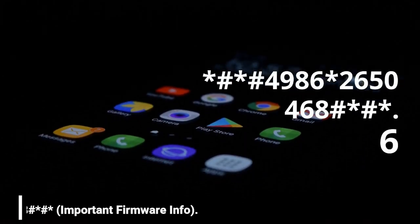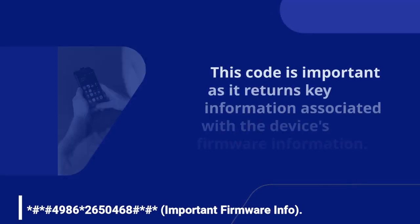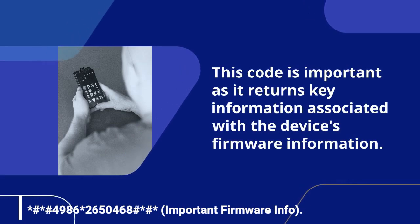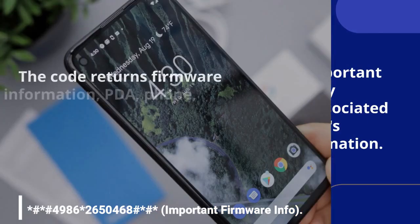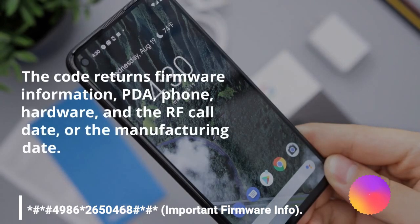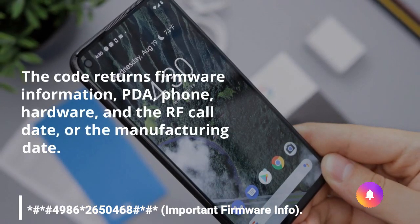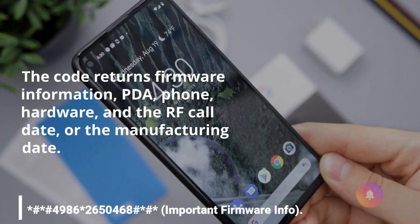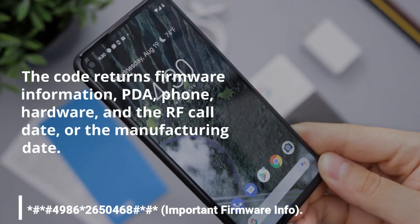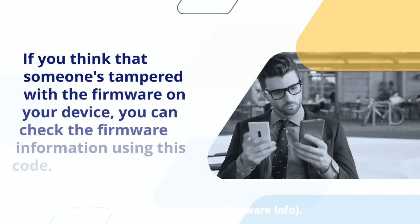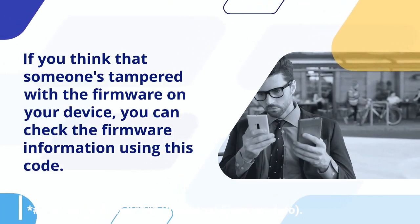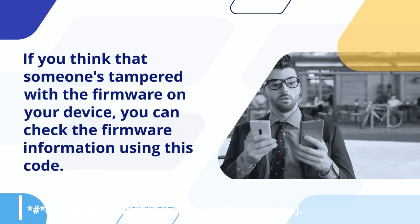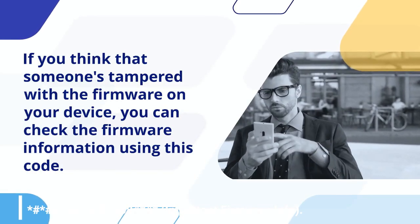This code is important as it returns key information associated with the device's firmware. The code returns firmware information, including PDA, phone, hardware, and the RF call date — or the manufacturing date. If you think that someone's tampered with the firmware on your device, you can check the firmware information using this code.